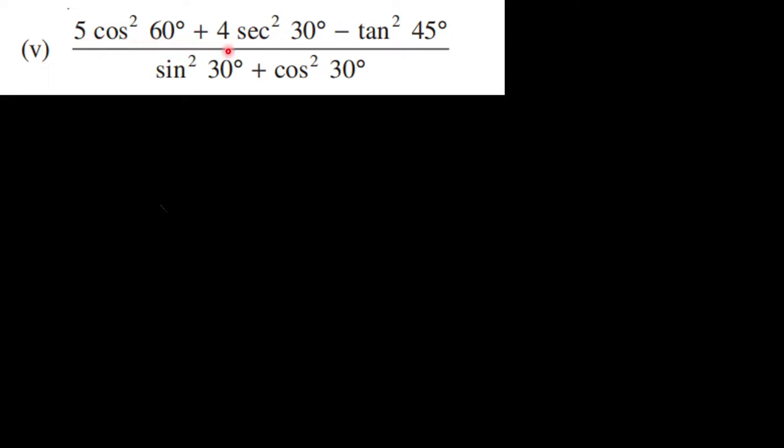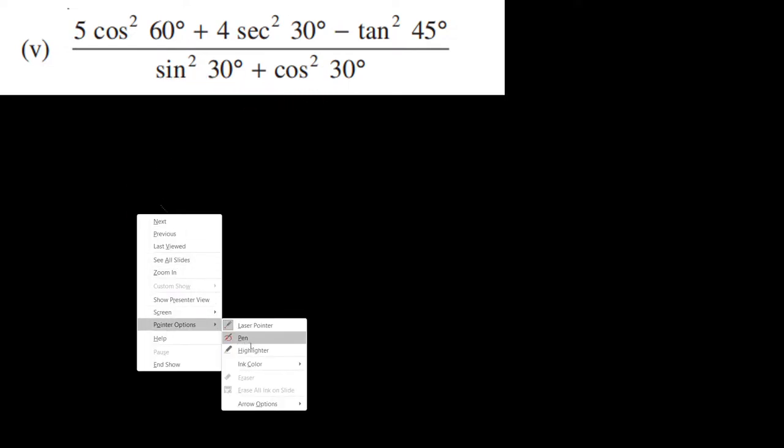5 cos square 60 plus 4 secant square 30 minus tan square 45 by sin square 30 plus cos square 30. We have to replace the values.